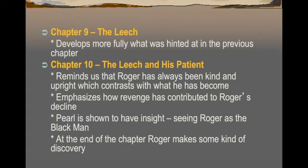In Chapter 9, The Leech, we continue with Roger Chillingworth and start wondering why he has taken upon this change, developing more fully what was hinted in the previous chapter. In Chapter 10, we see Roger is reminded as always kind and upright, which emphasizes the theme of revenge and how it has contributed to his decline. Pearl is starting to show more supernatural insight — she sees Roger as the black man, as an evildoer. She has no reason to think the doctor is evil, yet she sees that something is wrong with him.